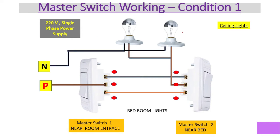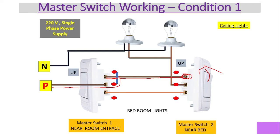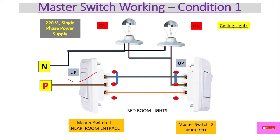Now let's understand how it works — there are four conditions. In condition one, suppose the master switch near the room entrance is in the up position. Power travels through that contact to the corresponding wire and terminal. When the second switch connects through its common terminal to the load, both lights will be on.